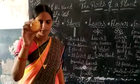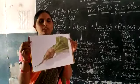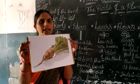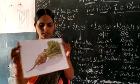Some plants like carrots, onion and radish store excess food in the roots.